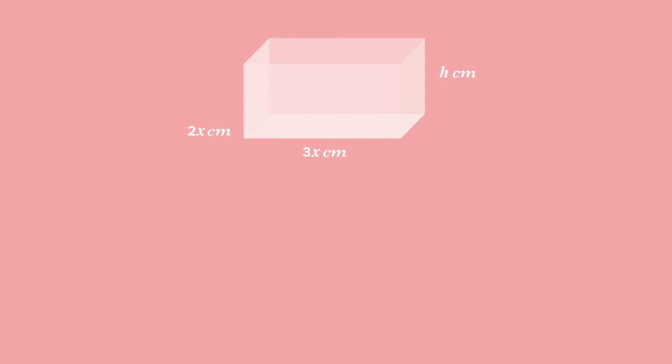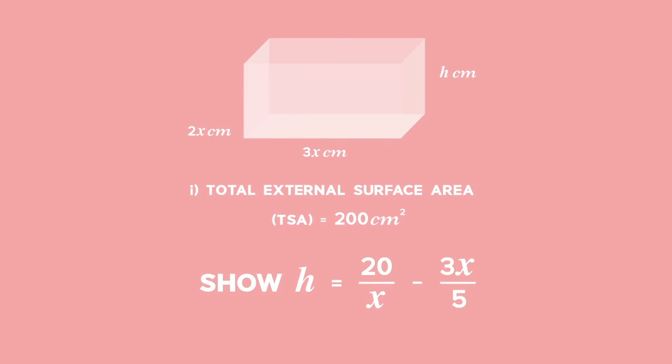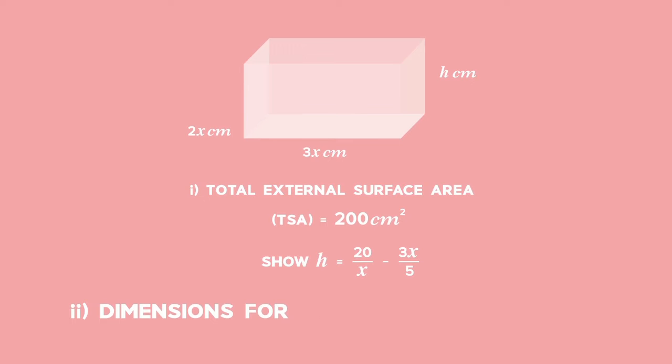1) If the total external surface area is 200 square centimetres, show that h = 20/x - 3x/5. 2) Find the dimensions of the box that will maximize the volume.